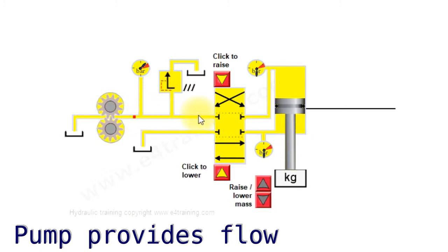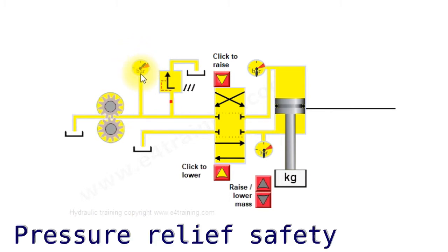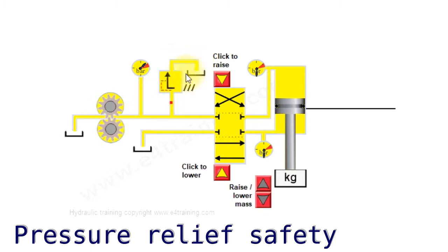We've now got oil coming into the system with absolutely nowhere to go. The pressure gauge records the pressure and is showing maximum pressure at the moment because all the fluid is going out through our safety relief valve. Without this valve the system would essentially explode or the pump would break. So we've got a pressure relief valve taking the fluid away.